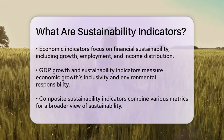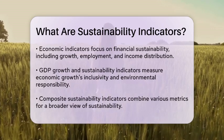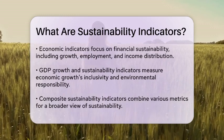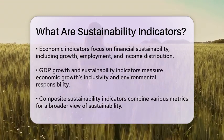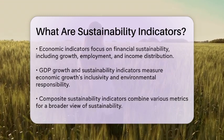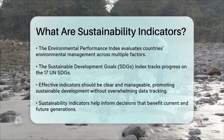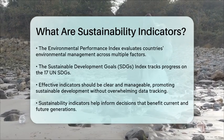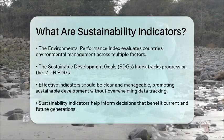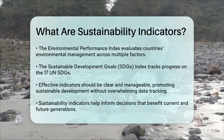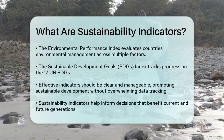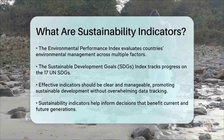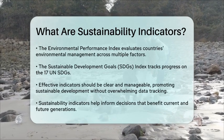Composite sustainability indicators combine various individual metrics to provide a broader view. The Environmental Performance Index, for example, assesses how well countries manage their environmental responsibilities, focusing on air quality, water, biodiversity, and climate change. The Sustainable Development Goals (SDGs) index tracks progress across the 17 United Nations SDGs, covering issues from poverty eradication to climate action.